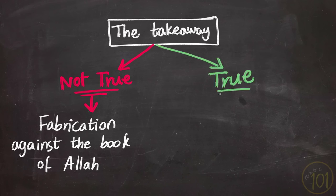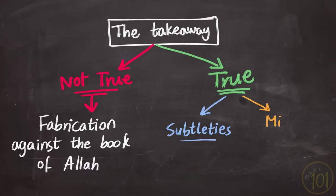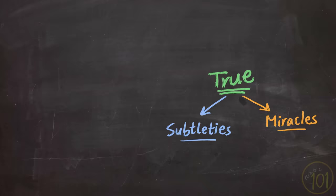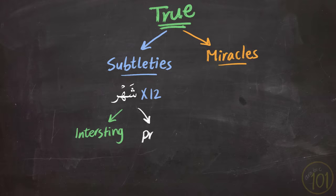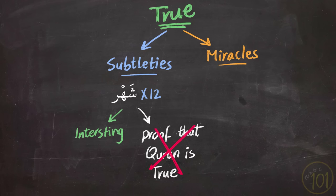And second, if these facts are indeed true—which they might be—we should still distinguish between the subtleties and the miracles of the Quran. Subtleties are these little details that are interesting and actually quite nice, but they are not and should not be used as a way to prove the truthfulness of the book.